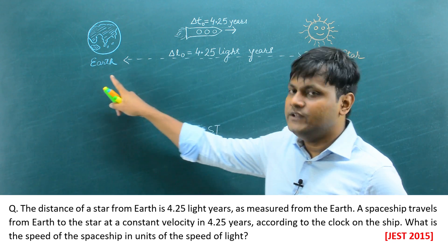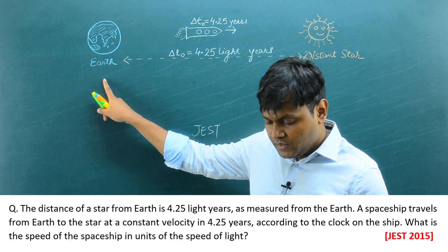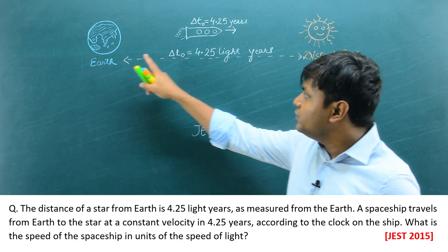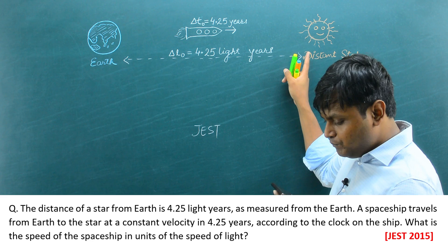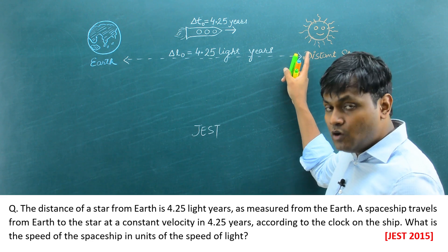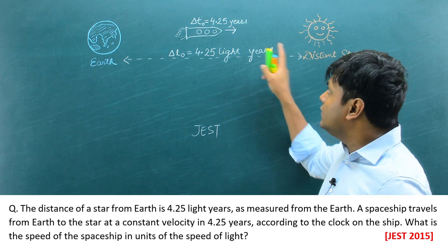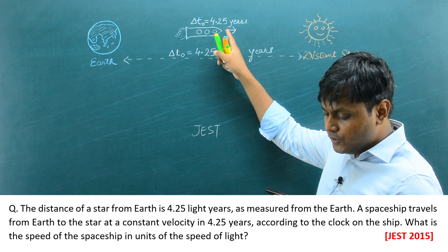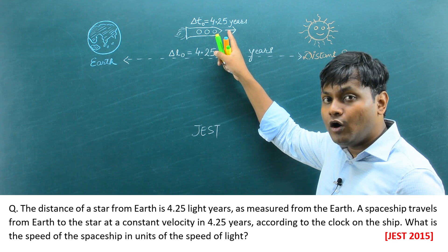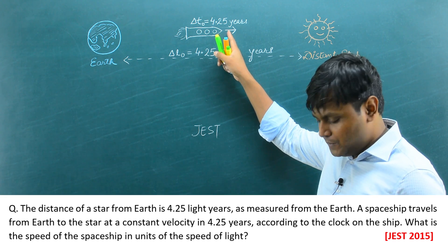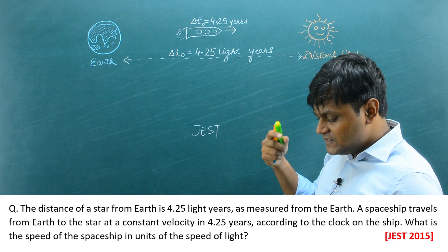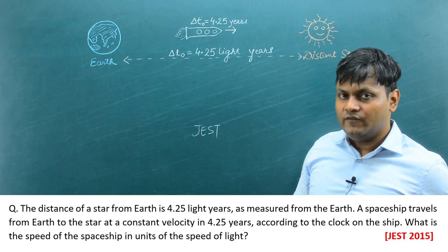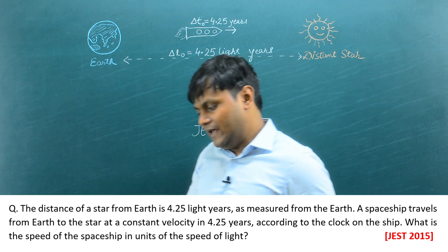JEST 2015. It goes something like this: the distance of a star from the Earth is 4.25 light years as measured from the Earth. A spaceship travels from the Earth to the star at a constant velocity in 4.25 years according to the clock on the ship. What is the speed of the spaceship in units of the speed of light?